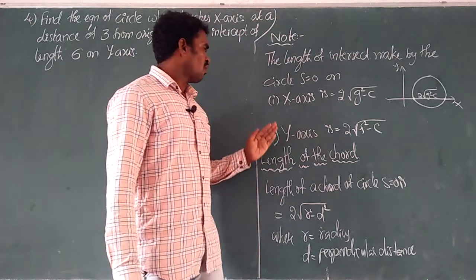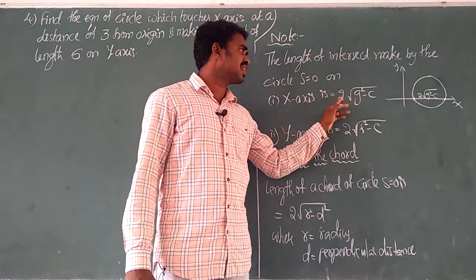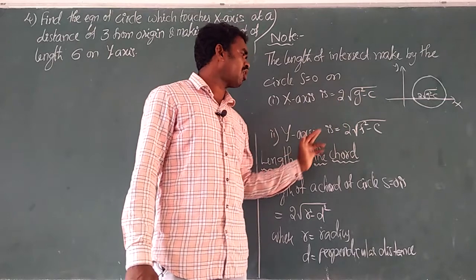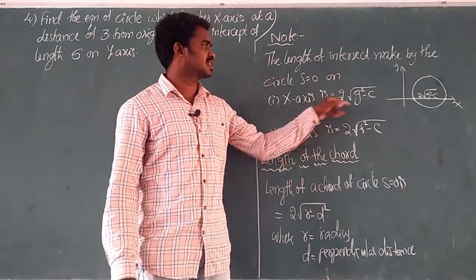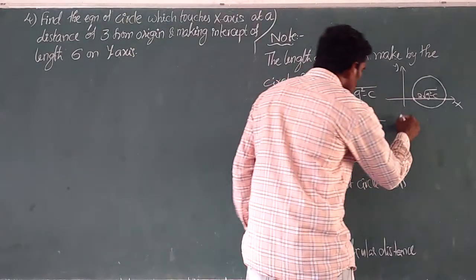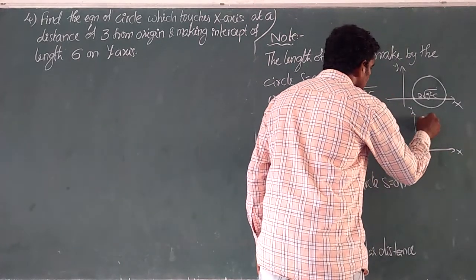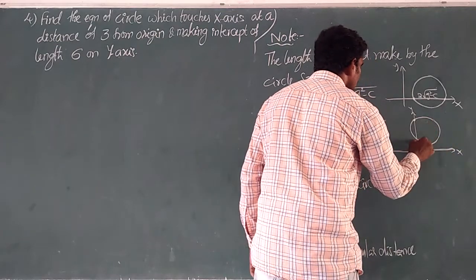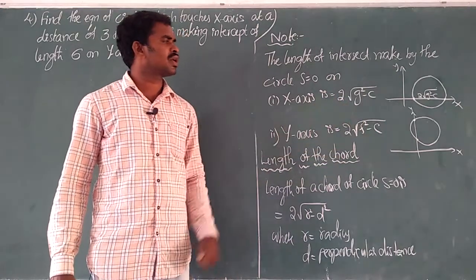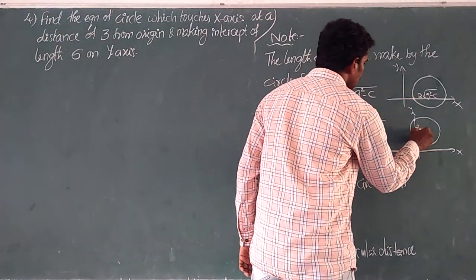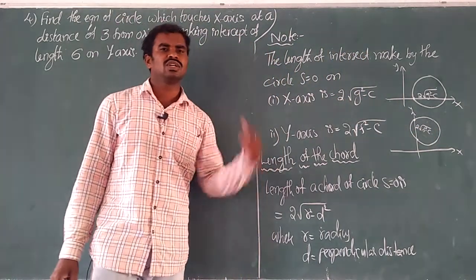Similarly, can you guess what is the length on the y-axis? If on x-axis it is 2√(g² − c), then on the y-axis it will be 2√(f² − c). So the circle intersects the y-axis and that part is the length of the intercept on y-axis, which is 2√(f² − c). If you know these formulas and definitions, we can very simply solve the last 4 questions in this part.